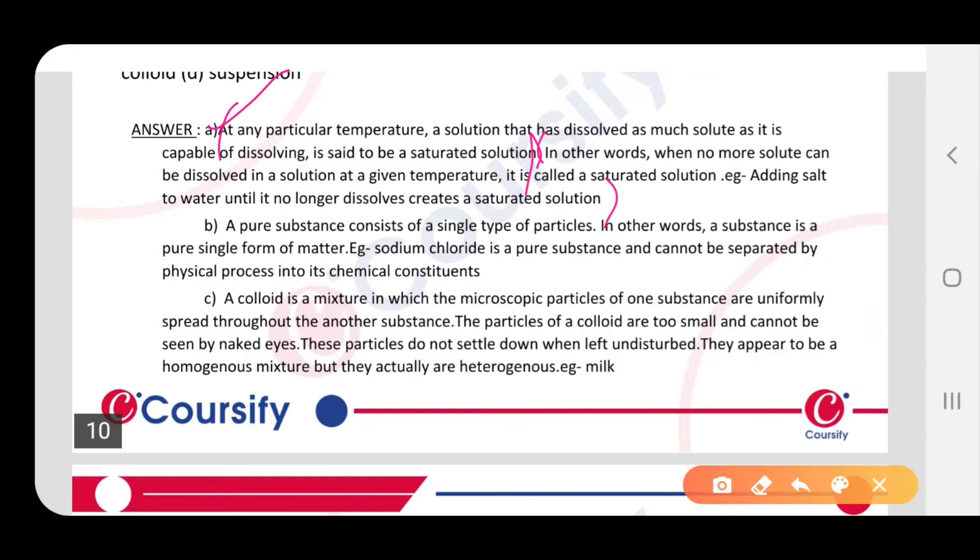Second hai, pure substance. A pure substance consists of a single type of particles. Toh pure substance mein sirf ek type of particles rahe ga. Matlab ki, joh jitne bhi substance mein jitne bhi particles hai, woh sare same rahenghe. Sirf ek type. In other words, a substance is a pure single form of matter. Example,